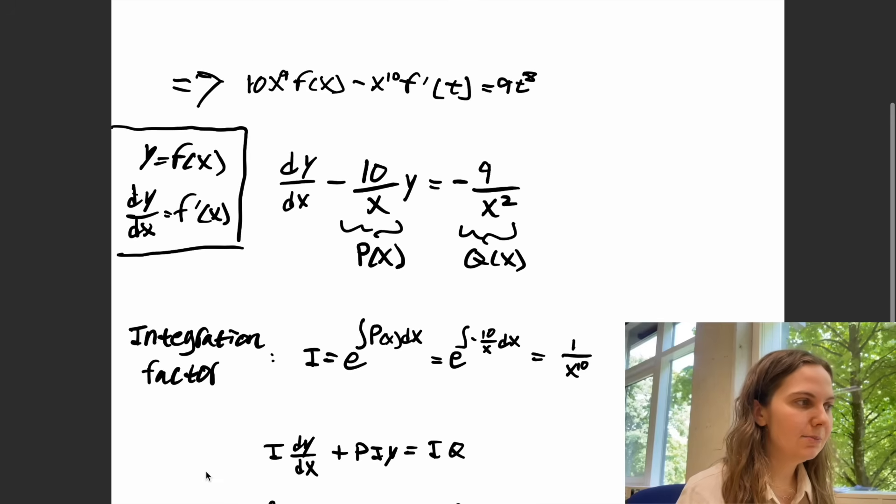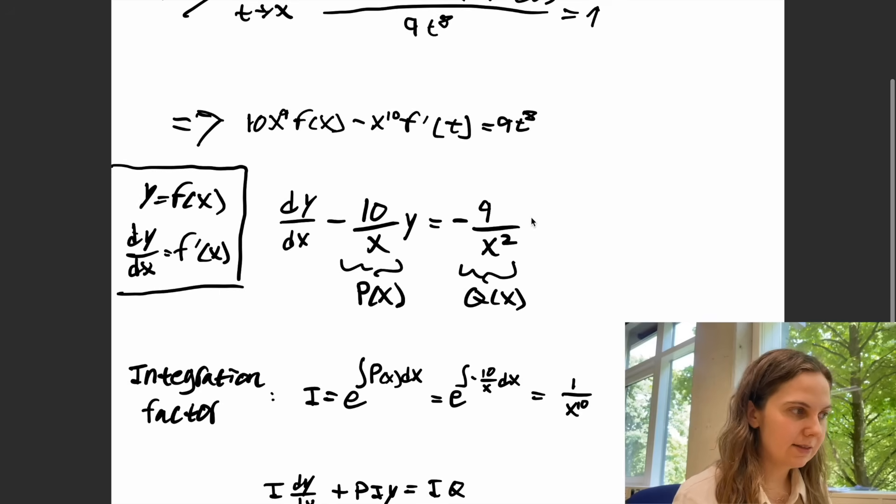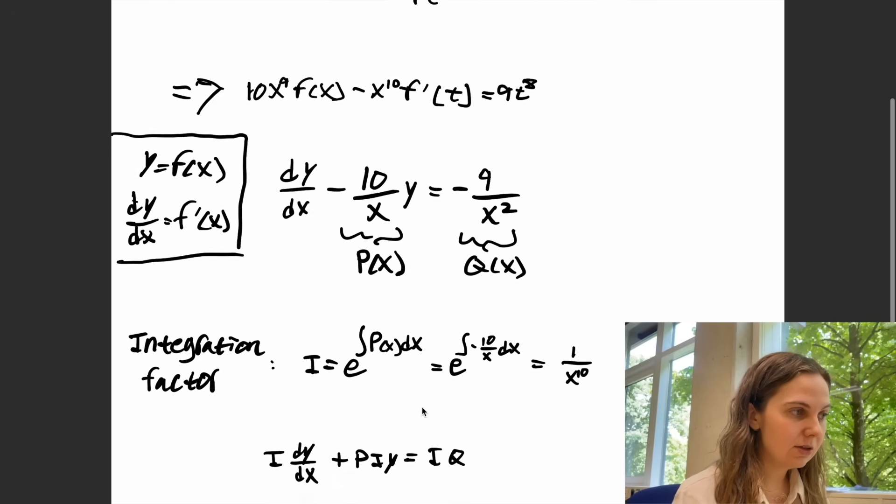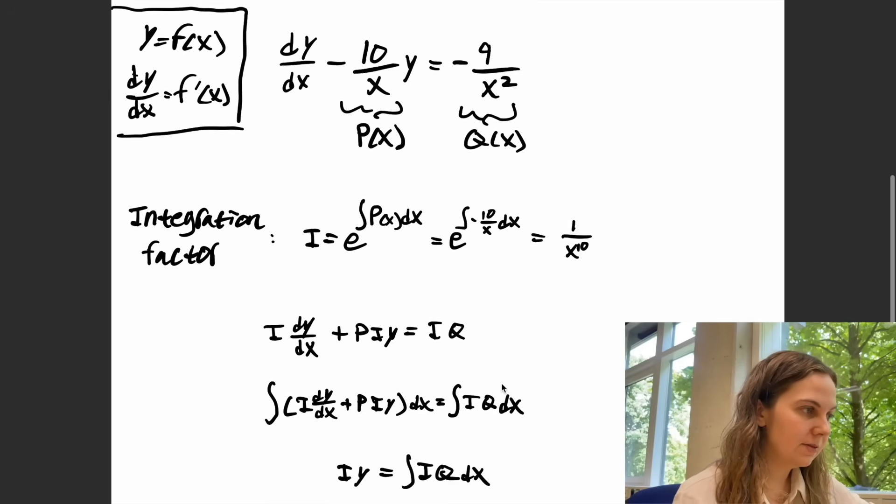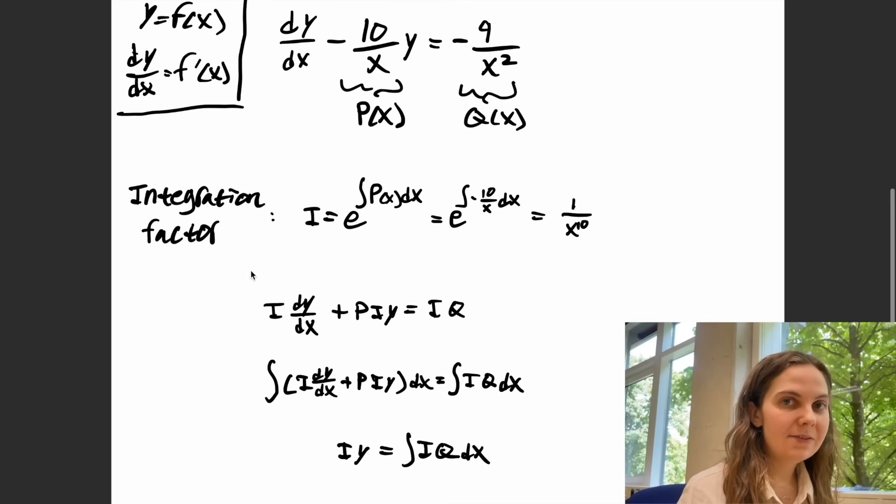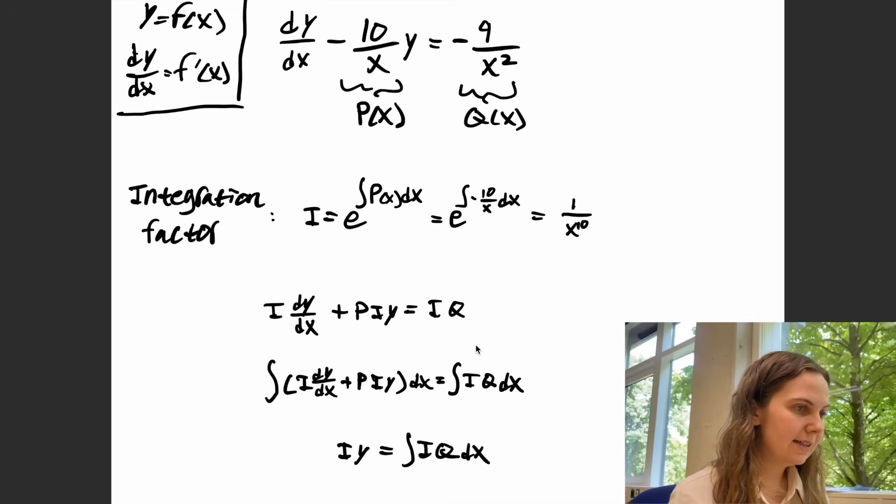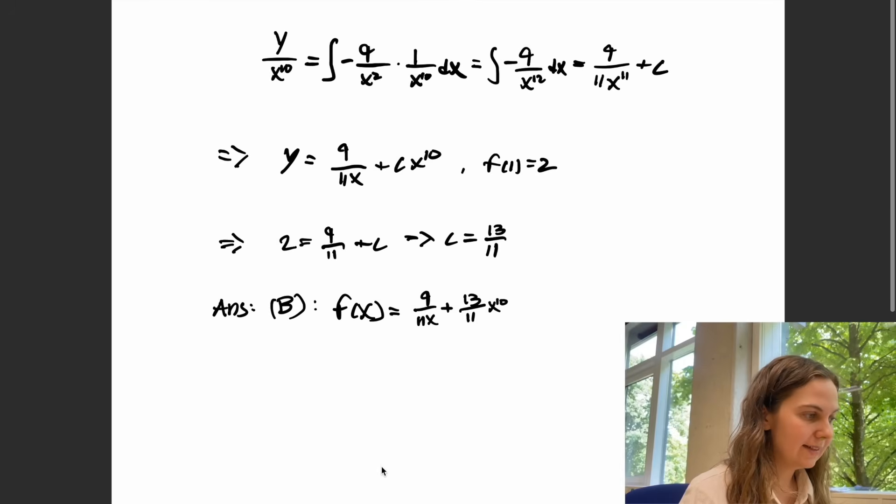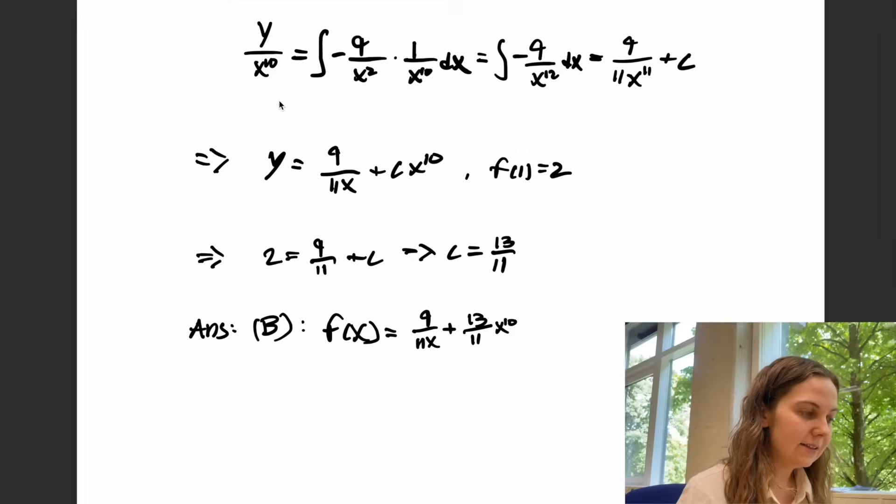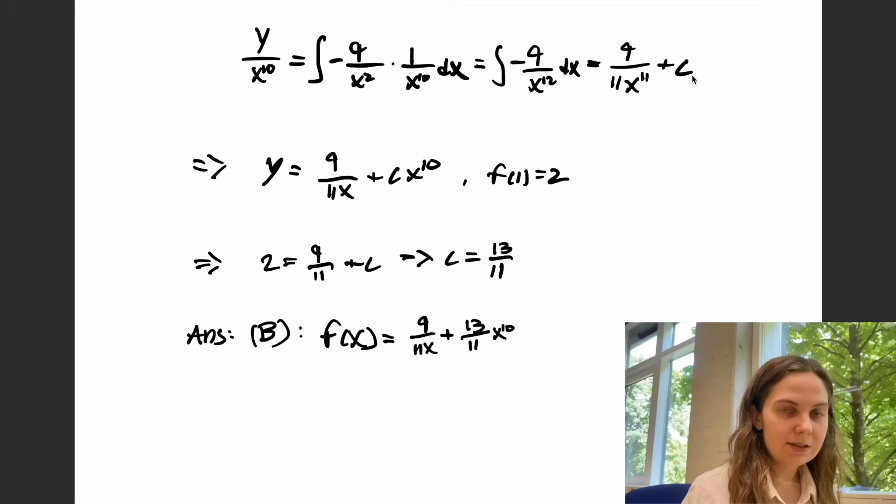So in our case we're going to define minus 10 over x as being our p(x) and minus 9 over x squared as being our q(x) and our integrating factor is just this exponential which we can work out as being 1 over x to the power of 10. Now if we multiply both sides of this equation with the integrating factor we see that the left-hand side is just the integral of the derivative of y times i. So since we know that our i is 1 over x to the power of 10 we can plug this in and work out the integral and we get that y over x to the power of 10 is the integral of minus 9 over x to the power of 12 which we can work out as being 9 over 11 times x to the power of 11 plus some integrating constant c.